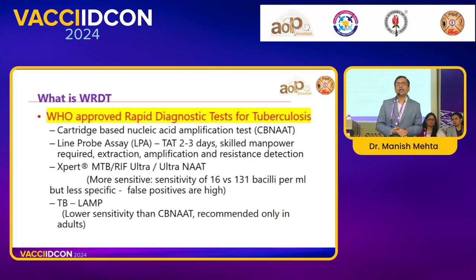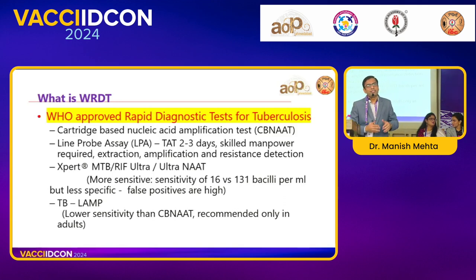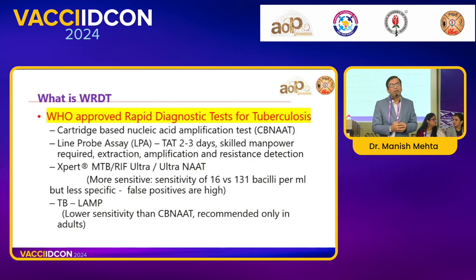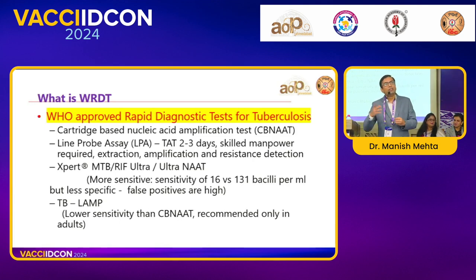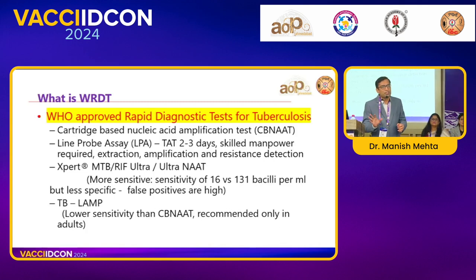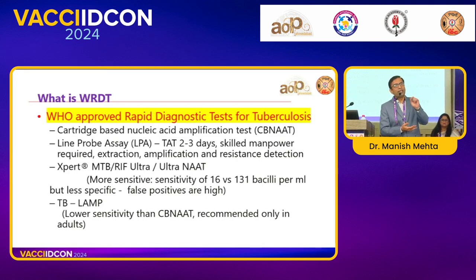What tests are used for diagnosis of tuberculosis? WHO-approved tests include CBNAAT, which is the most commonly used. Another is LINE probe assay, also a type of PCR, but a slower process — extraction, amplification, and isolation are separate steps, taking 2-3 days for results. CBNAAT does all of these together, giving results in 2-3 hours. Xpert MTB/RIF Ultra is very sensitive — it can detect as few as 16 bacilli per ml compared to 131 per ml for standard CBNAAT. However, because it is highly sensitive, chances of false positives exist since non-viable bacilli can also be detected. TB LAMP is used mainly for sputum samples, but as children have paucibacillary disease, it is not as useful in pediatric cases.